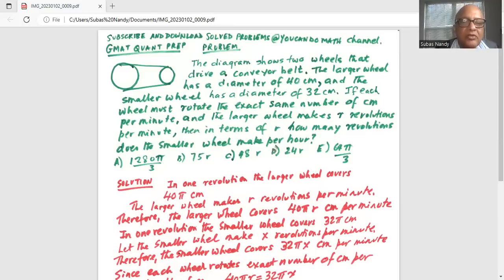If each wheel must rotate the exact same number of cm per minute and the larger wheel makes r revolutions per minute, then in terms of r, how many revolutions does the smaller wheel make per hour? And then there are five options for the answer.